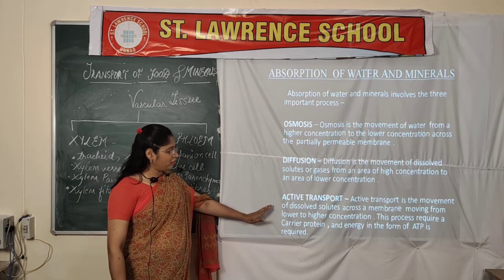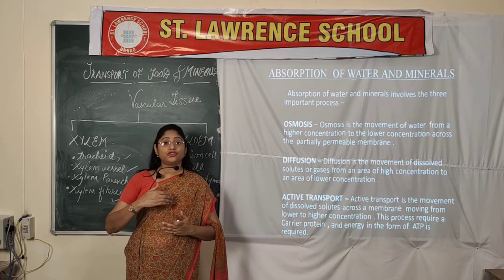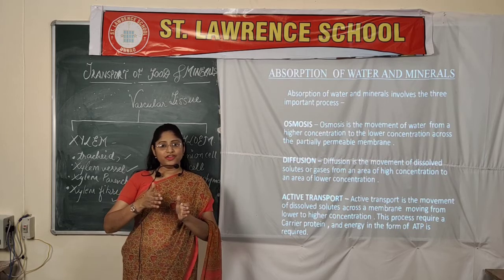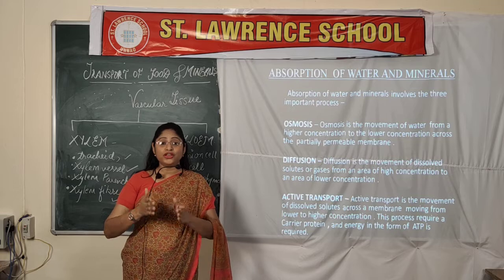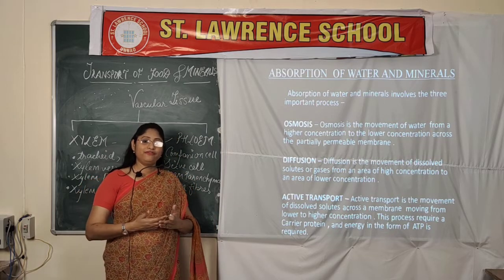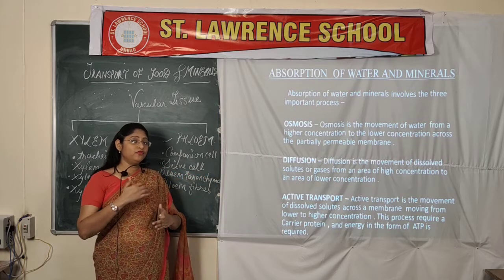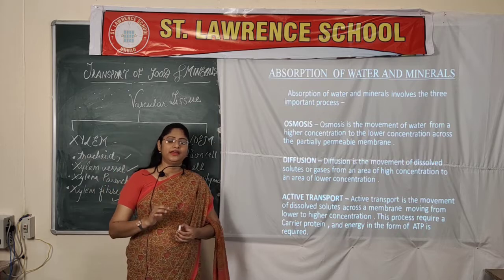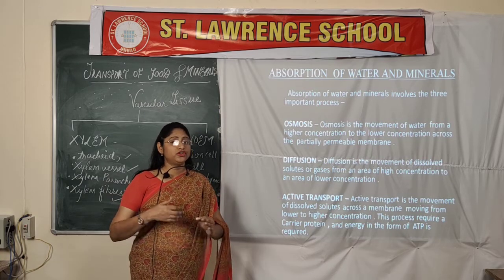The third important phenomenon is active transport. This type of transportation involves the transportation of salts and ions, and the movement takes place from lower concentration to higher concentration — opposite to diffusion and osmosis. To transport these solutes and ions from one cell to another, a carrier protein is required. Because it is against osmosis and diffusion, it requires energy in the form of ATP, which is utilized for transportation of various solutes, salts, or ions.